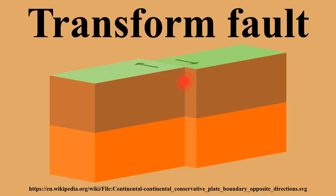John Tuzo Wilson recognized that the offsets of oceanic ridges by faults do not follow the classical pattern of an offset fence or geological marker. In Reid's rebound theory of faulting, from which the sense of slip is derived, the new class of faults, called transform faults, produce slip in the opposite direction from what one would surmise from the standard interpretation of an offset geological feature.